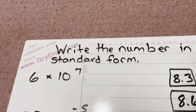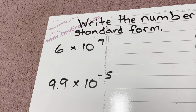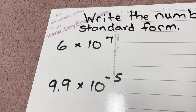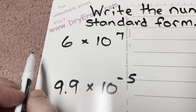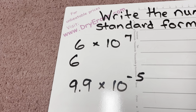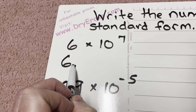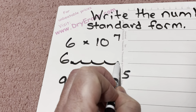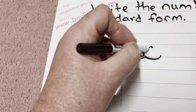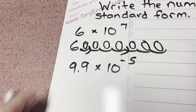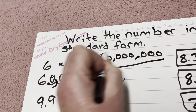Now, write the number in standard form. We have 6 times 10 to the power of 7. It's going to start with a 6, and essentially the decimal's here — I'm going to move that decimal seven places to the right: 1, 2, 3, 4, 5, 6, 7. I'm going to fill all these empty spots with zeros, and I end up with essentially 60 million. That's going to be my final answer.